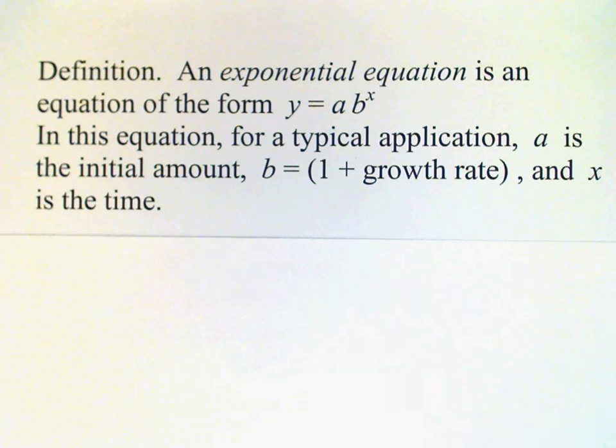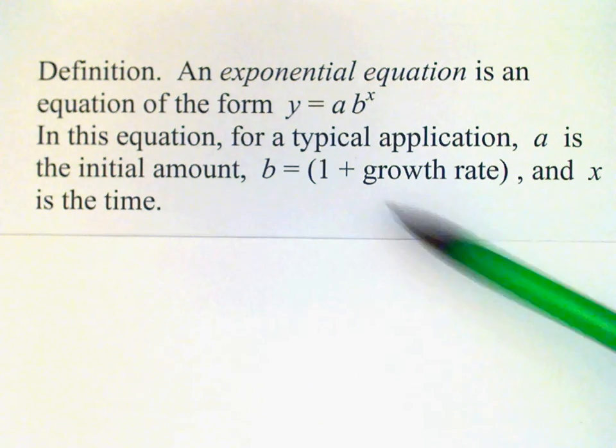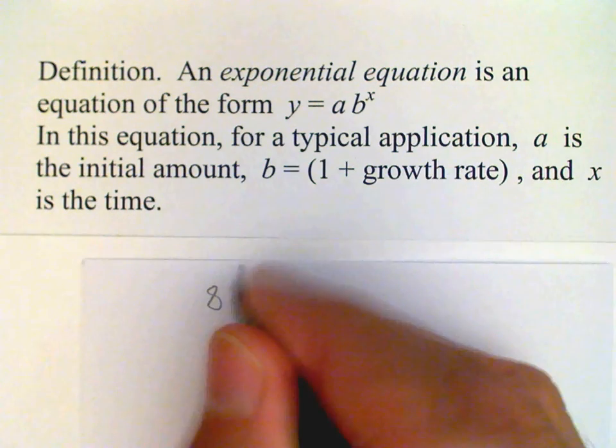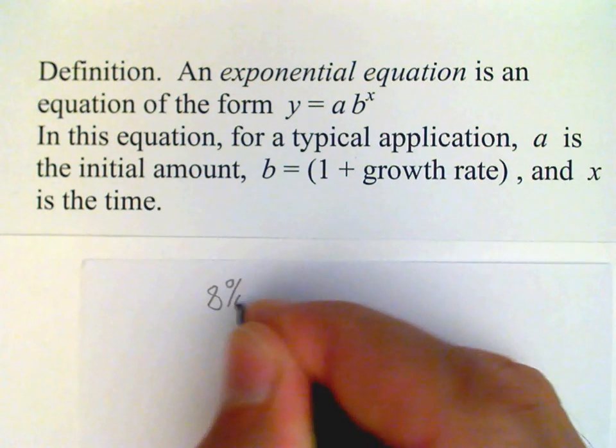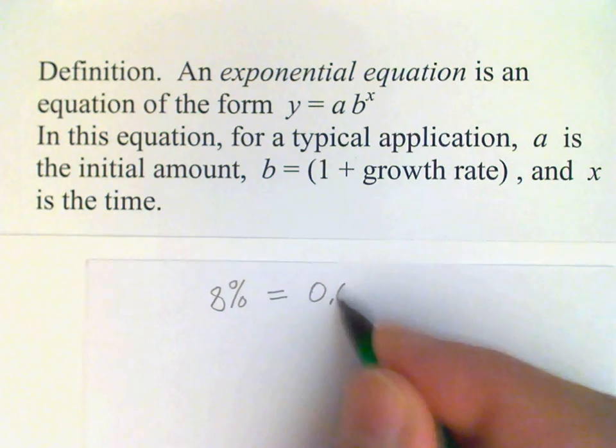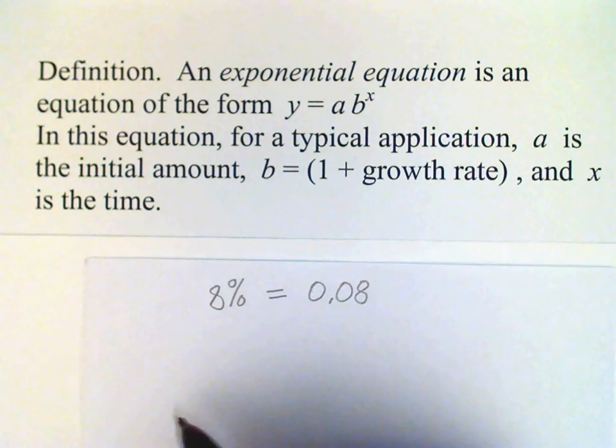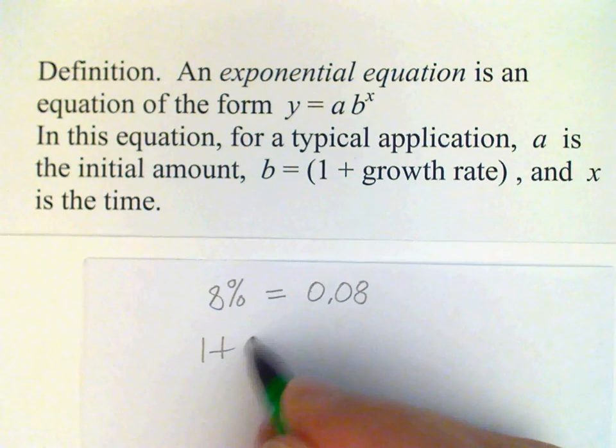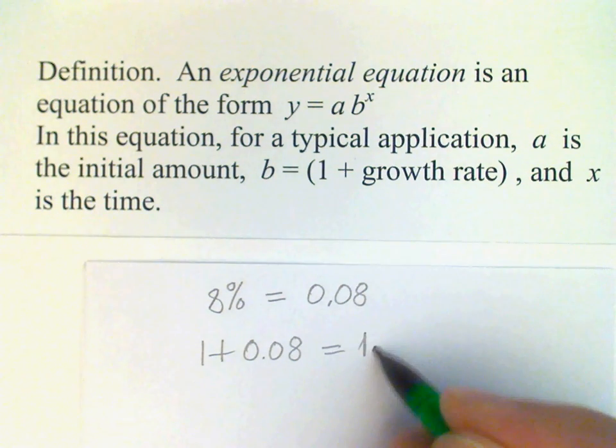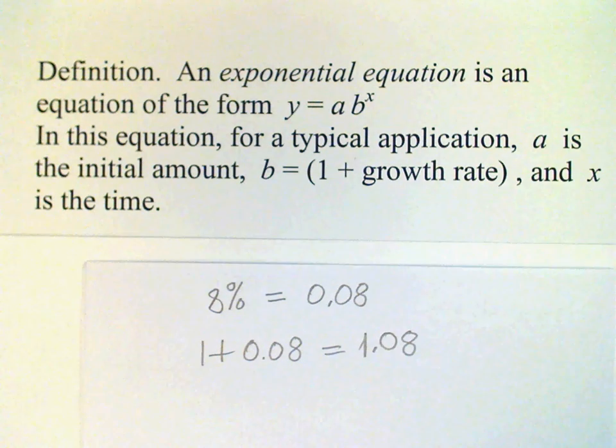B is going to be 1 plus the growth rate. If we have 8% for our growth rate, building on the previous example, we have to convert that to a decimal 0.08, and then 1 plus 0.08 gives us 1.08. That's our value for b.